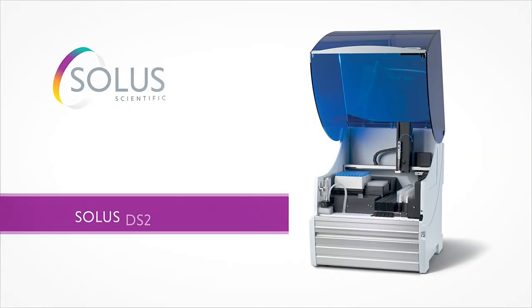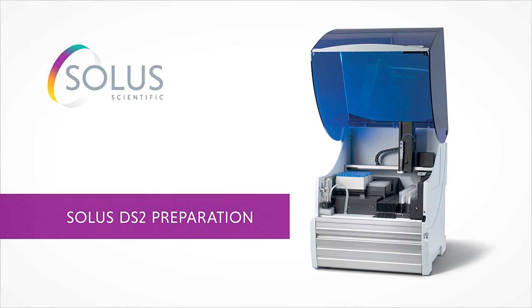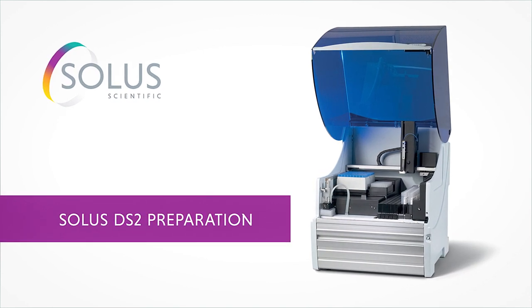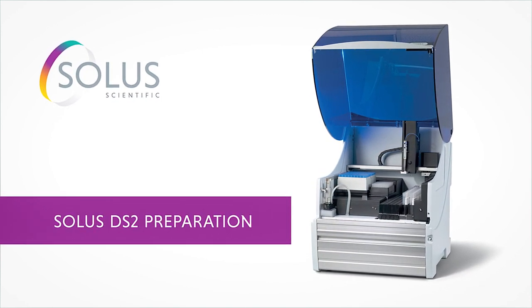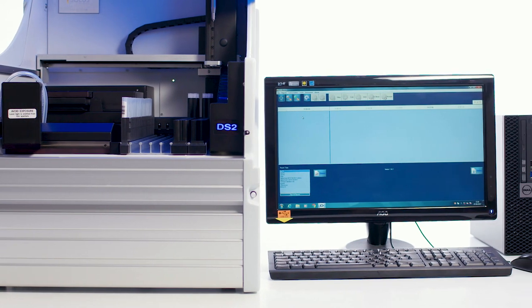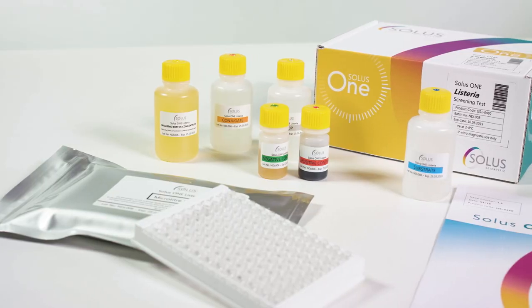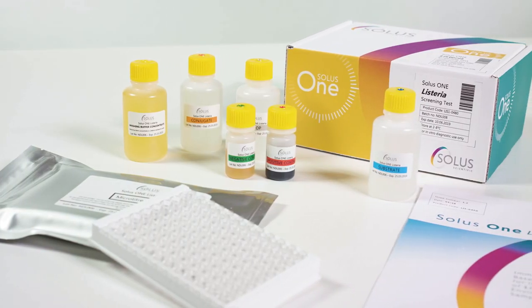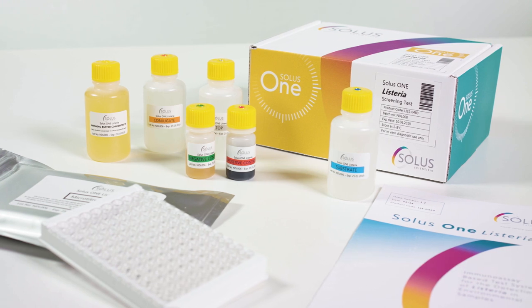The presence of the pathogen is detected by immunoassay, which is fully automated using DS2 liquid handling automation. The DS2 instrument guides the operator through each step required to set up the assay. Everything required is included within the Solus1 kit and is color-coded for ease of use.